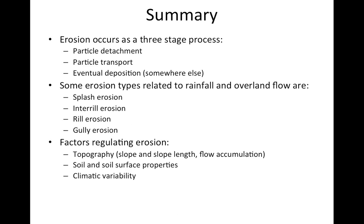In summary, erosion occurs as a three-stage process. First, particles are detached from the soil surface into the flow. Then we transport those particles. Eventually, when the flow decreases due to cessation of rainfall or moving into a flatter area with lower flow velocities, we get deposition of those sediments elsewhere. We have different types of erosion: splash, interrill, rill, and gully erosion — interrills being the mounds in between the rills. Factors regulating erosion include topography, slope, slope length, whether flow is accumulating or dispersing, soil and soil surface properties, and climate and rainfall variability including how the rain fell.